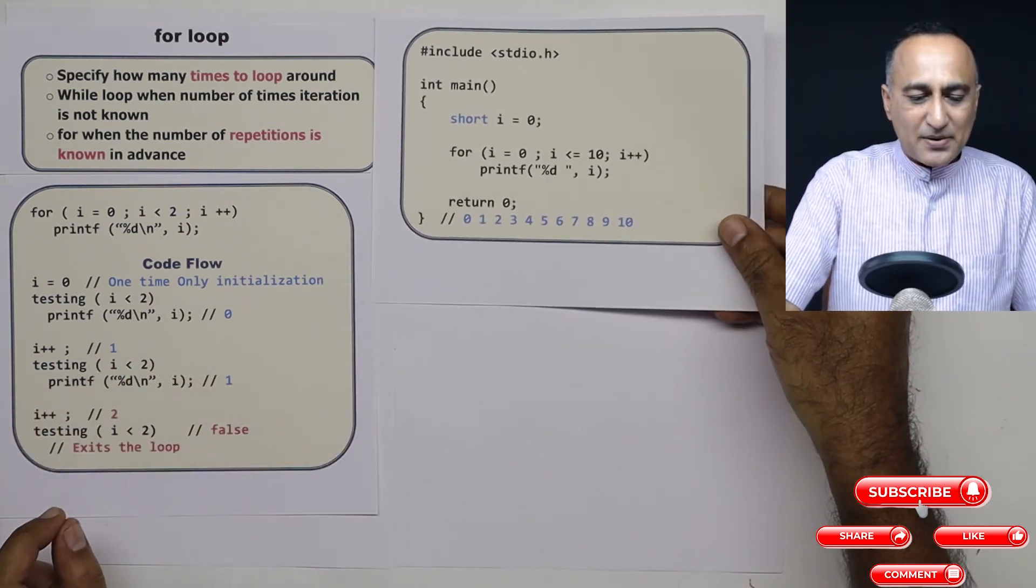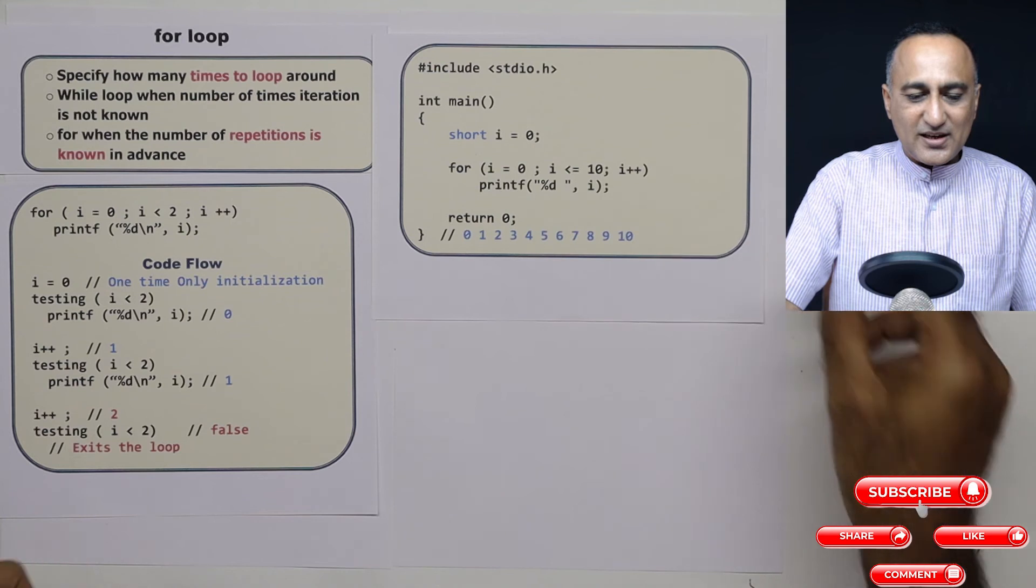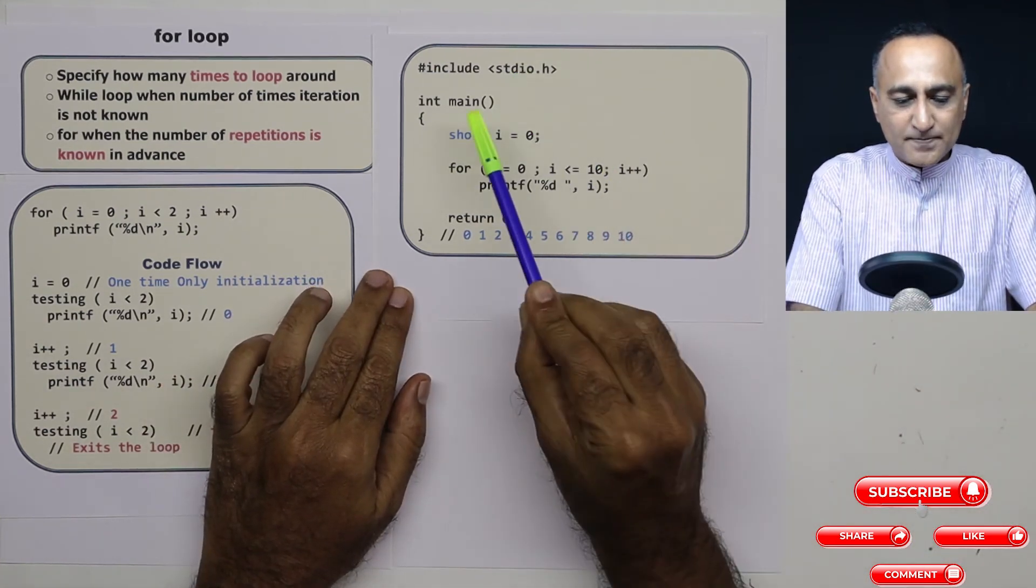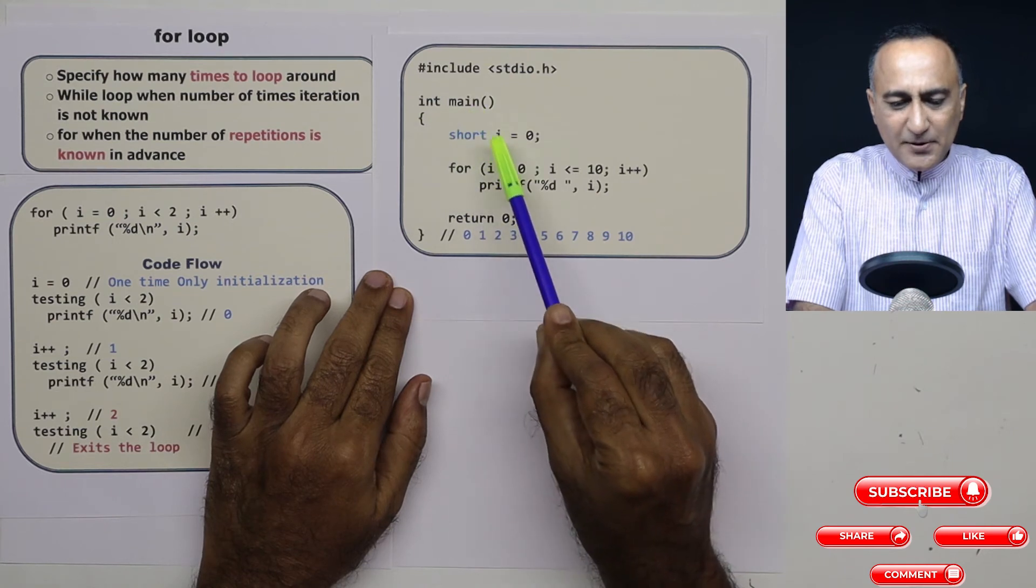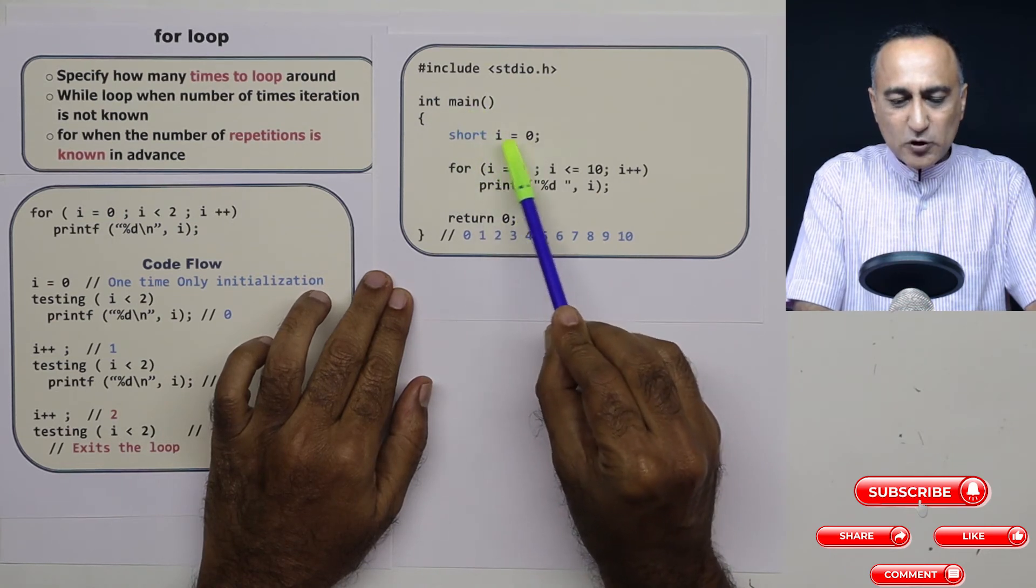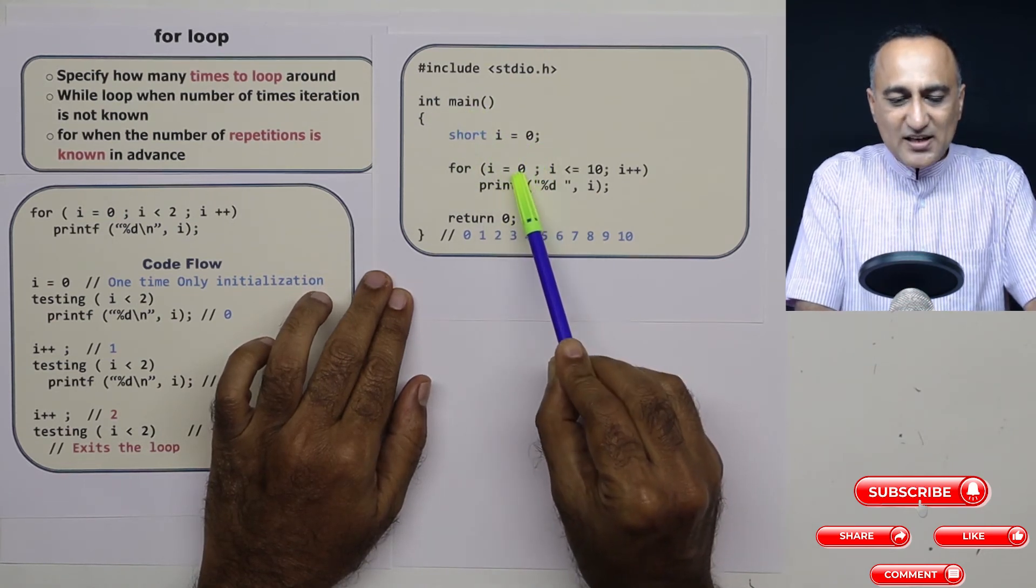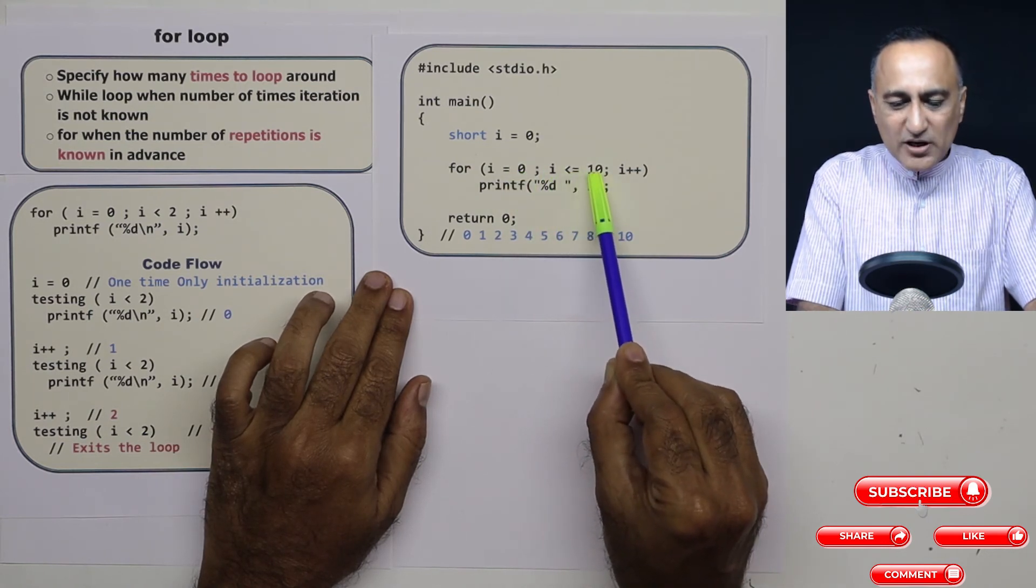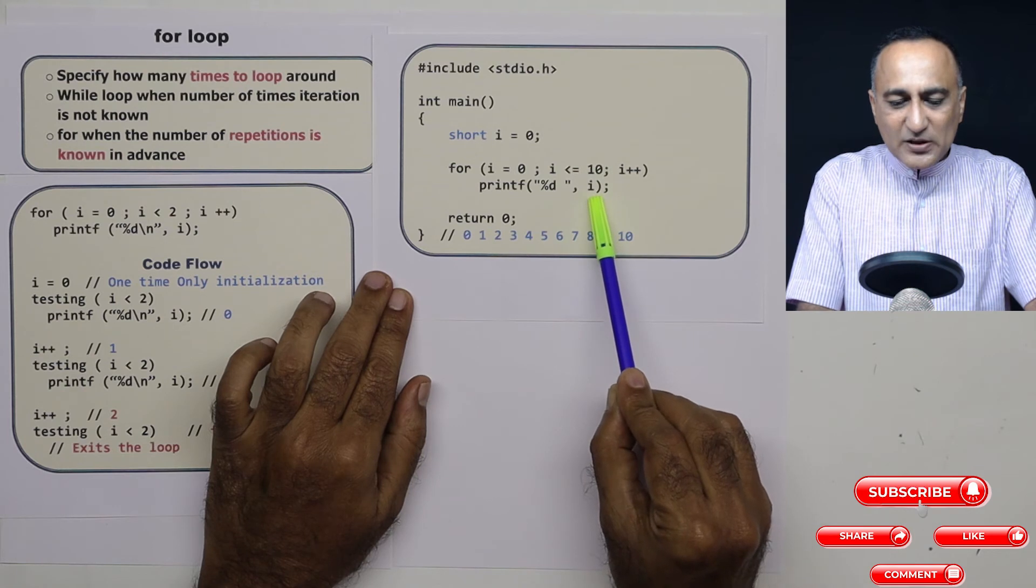So this simple example here, which follows the earlier discussion, should give you a better idea of the for loop working. I have declared int main a variable i of the type short integer zero. Initial value of i is zero. As long as i is less than or equal to ten, I am printing the value of i.